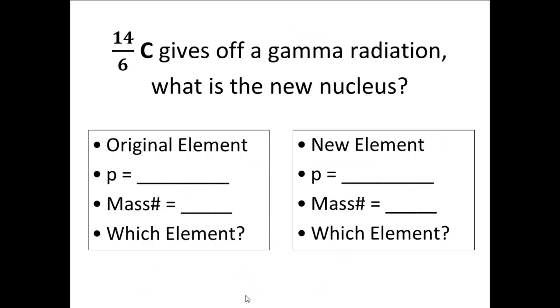Another scenario is that 14 over 6 carbon, which is a radioactive form of carbon, and often used in half-life dating of things in the recent past, the last 5,000, 10,000 years, we can use carbon half-life dating. The original element, as we said before, was carbon. I'll just write that in both places there, to be redundant. The number of protons, we said it was 6, and the mass number was 14. Now the question is, when gamma radiation is given off, when gamma is given off, what is the new nucleus?